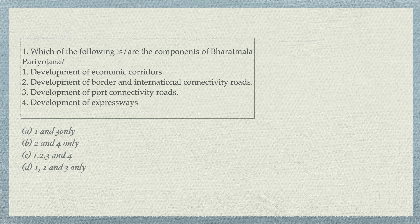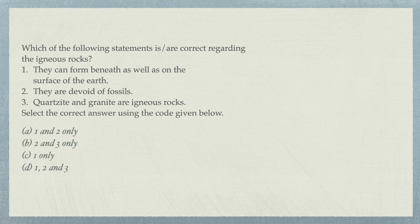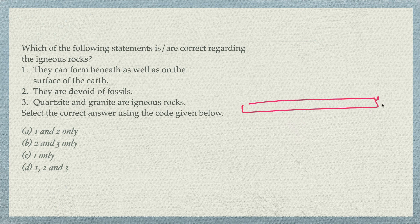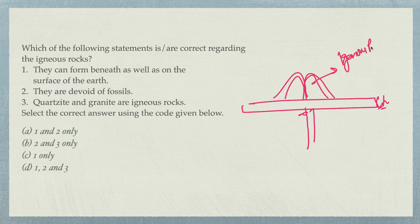Second question: Which of the following statements is correct regarding igneous rocks? The options are: they can form beneath as well as on the surface of the earth; they are devoid of fossils; quartzite and kyanite are igneous rocks. There are three types of rocks: igneous, sedimentary, and metamorphic. Igneous rock forms when lava from inside the earth deposits and cools.